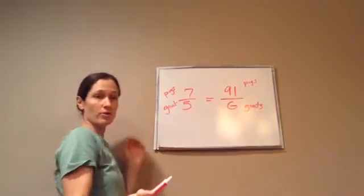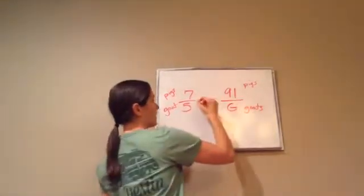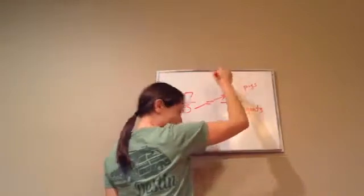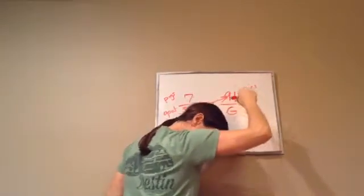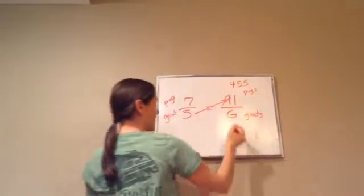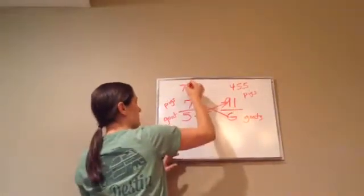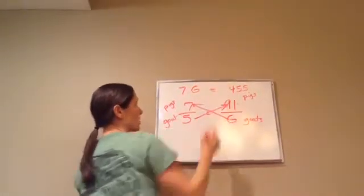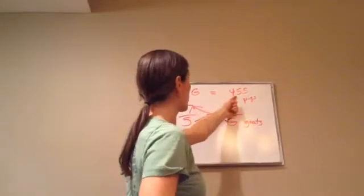And then you do exactly what we were just now doing. 5 times 91 is 455. I cheated a little bit. And then 7 times G is 7 times G. So 7 times what equals 455?